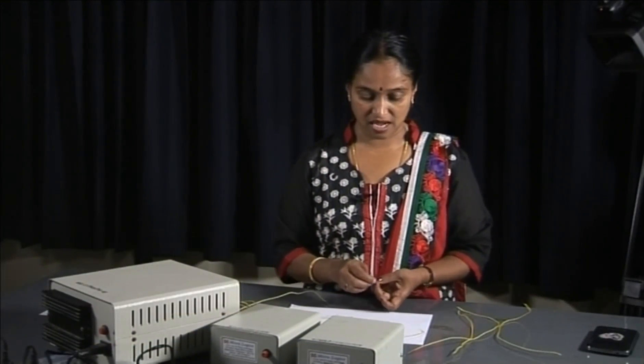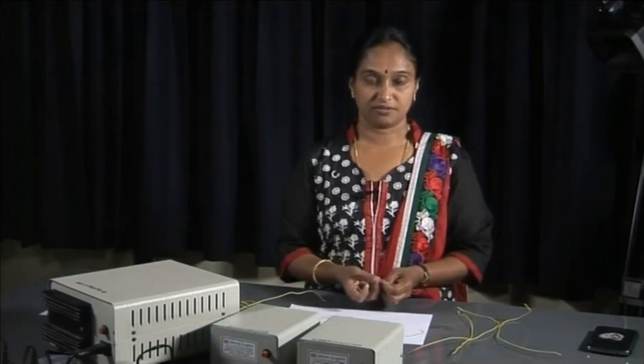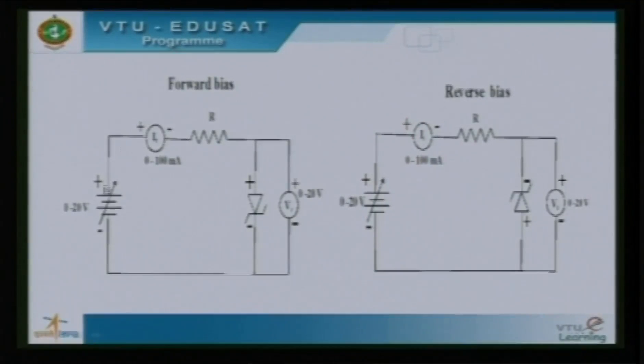Now let us start the circuit connections. Let me start with the forward biasing mode. The given Zener diode along with the resistor is connected in series with milliammeter and power supply and the voltmeter is connected across it as shown in the circuit diagram.